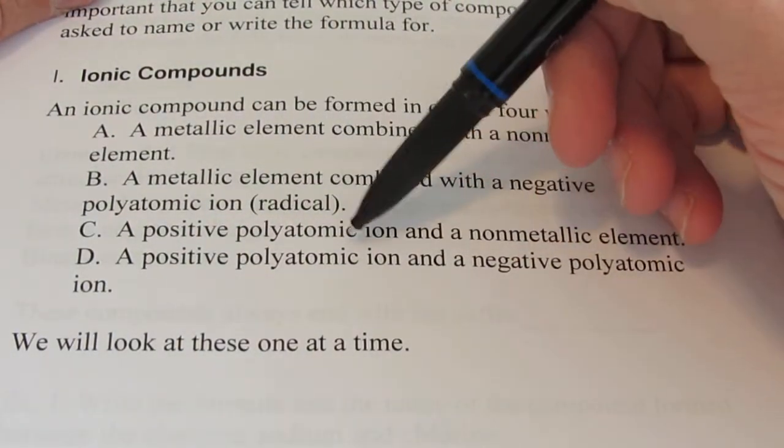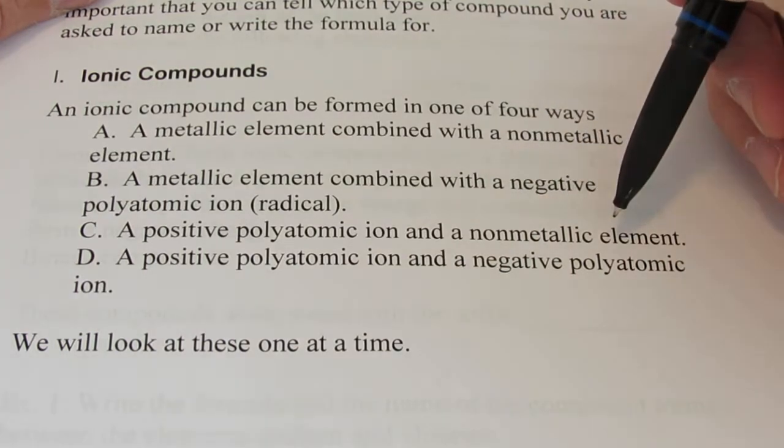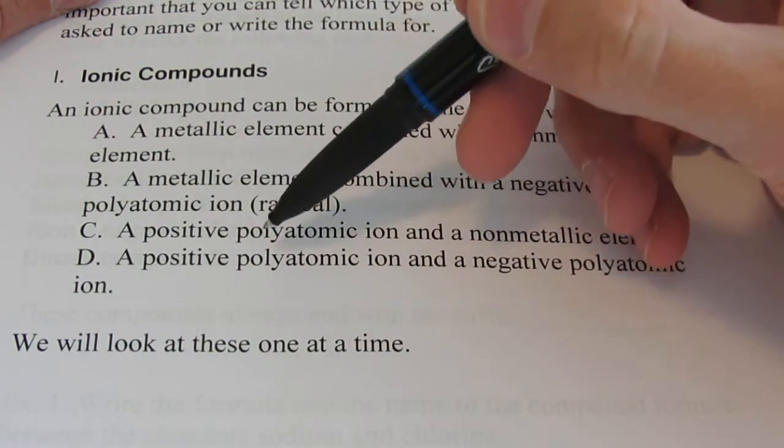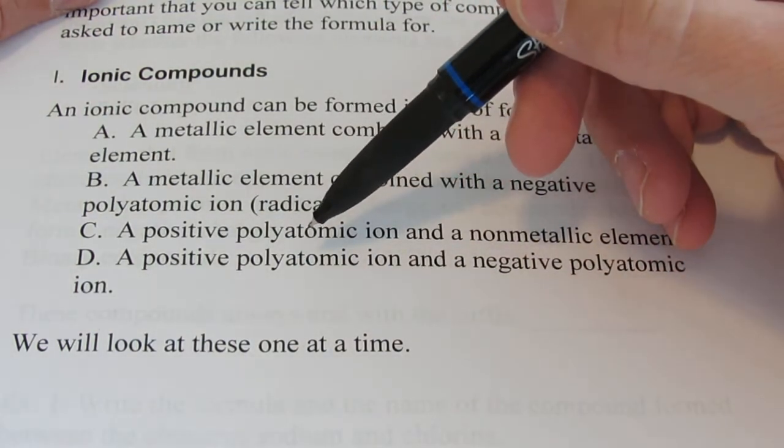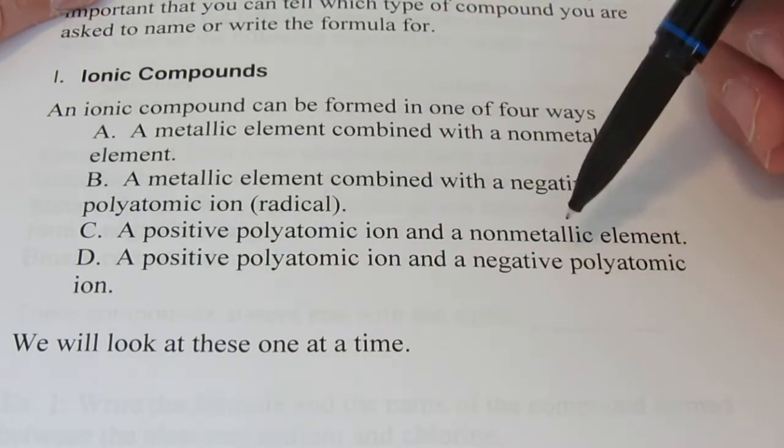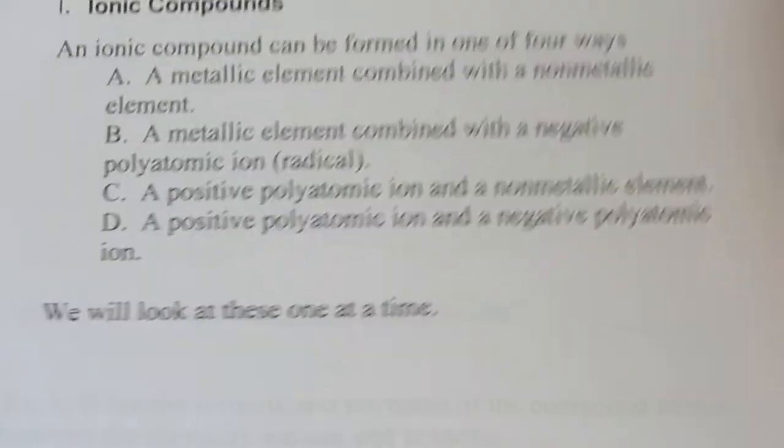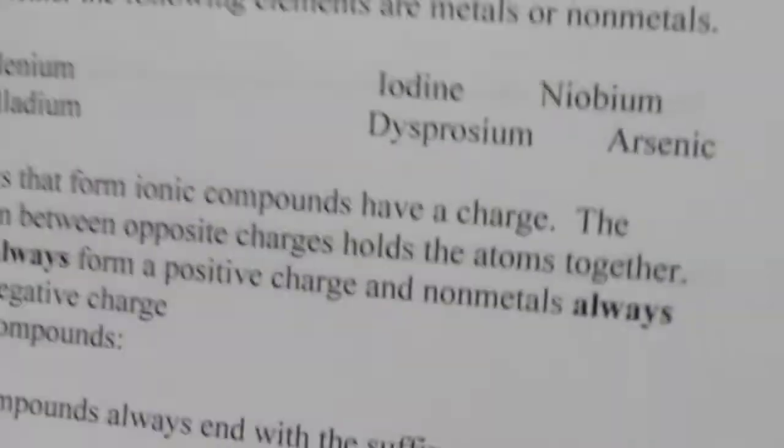Or, C, a positive polyatomic and a non-metallic element. And finally, D, we can have two polyatomic ions coming together, one positive and one negative. And we're going to take care of these just one at a time.